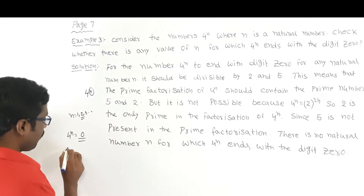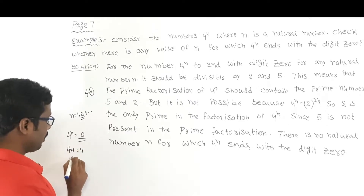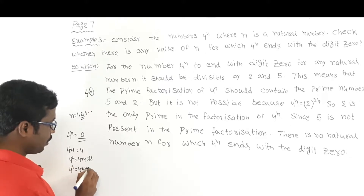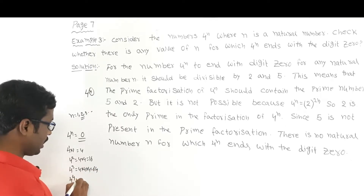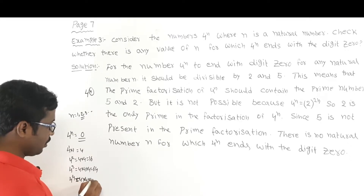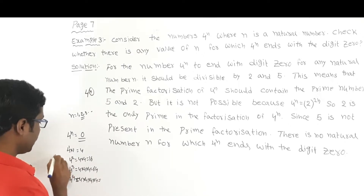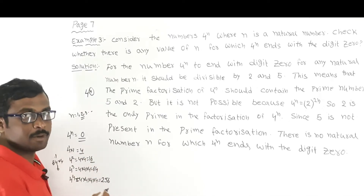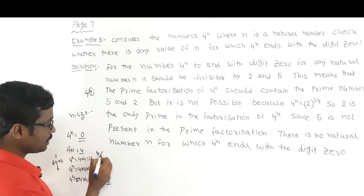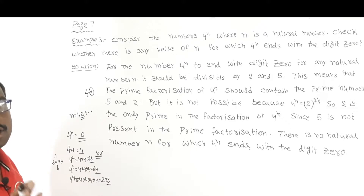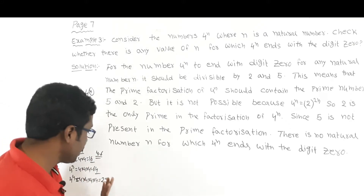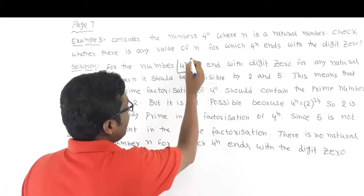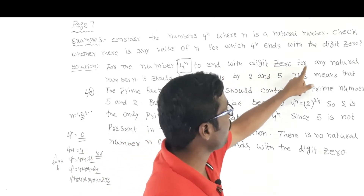Using simple logic: 4 to the power of 1 is 4. 4 to the power of 2 is 4 into 4, which is 16. 4 to the power of 3 is 4 into 4 into 4, which is 64. 4 to the power of 4 is 64 into 4, which is 256. So the last digits cycle: 4, 6, 4, 6. For 4 to the power of n to end with digit zero for any natural number...